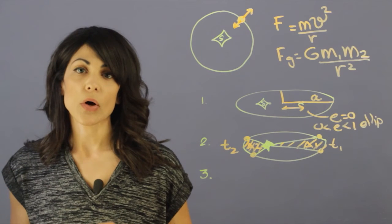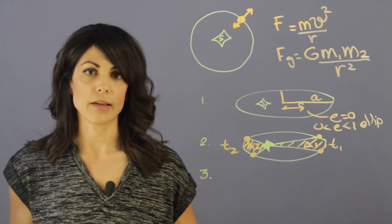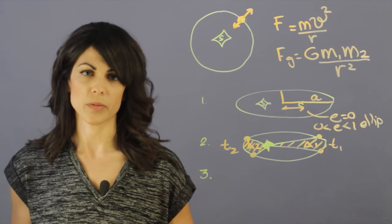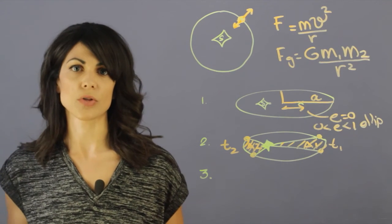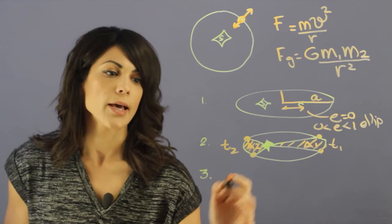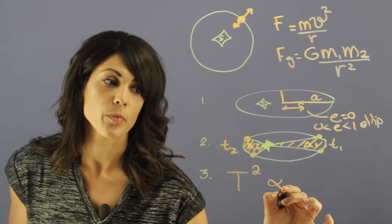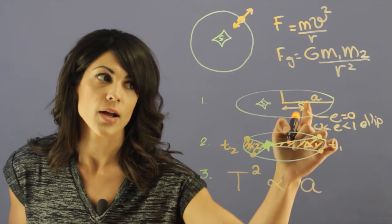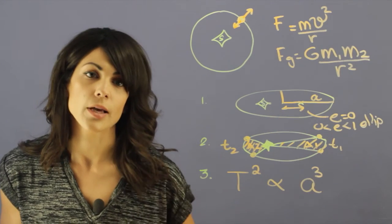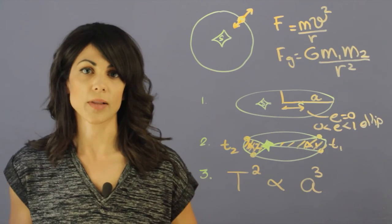Now, the third law is something that is very handy. And we generally approximate it and kind of take out some constants. It's a relationship that you should keep in mind. And it's that the orbital period squared is proportional to the semi-major axis cubed. And those are the three Kepler laws of planetary motion.